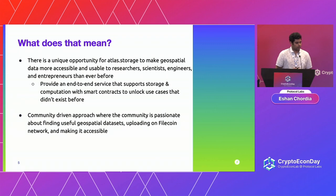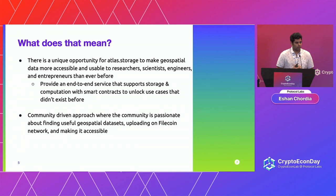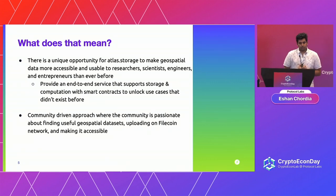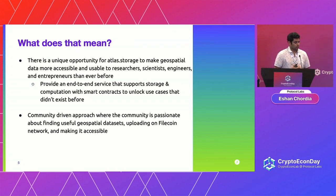There's a unique opportunity here to make geospatial data more accessible and usable to researchers, scientists, engineers, and entrepreneurs. Right now geospatial data sets are really highly segmented. If you want geospatial data from the U.S. government, you can find some on data.gov, but they're all over the place and not easy to use. We want to provide an end-to-end service that supports storage and computation with smart contracts to unlock use cases that didn't exist before.